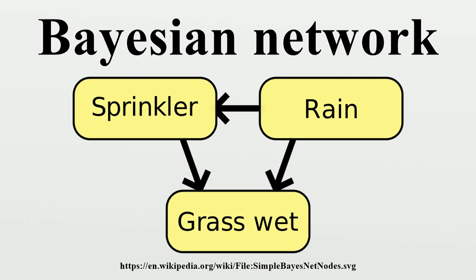However, if S is not observed, there is no other set that d-separates this path and the effect of turning the sprinkler on on the grass cannot be predicted from passive observations. We then say that P is not identified. This reflects the fact that, lacking interventional data, we cannot determine if the observed dependence between S and G is due to a causal connection or is spurious. To determine whether a causal relation is identified from an arbitrary Bayesian network with unobserved variables, one can use the three rules of do-calculus and test whether all the terms can be removed from the expression of that relation, confirming that the desired quantity is estimable from frequency data.